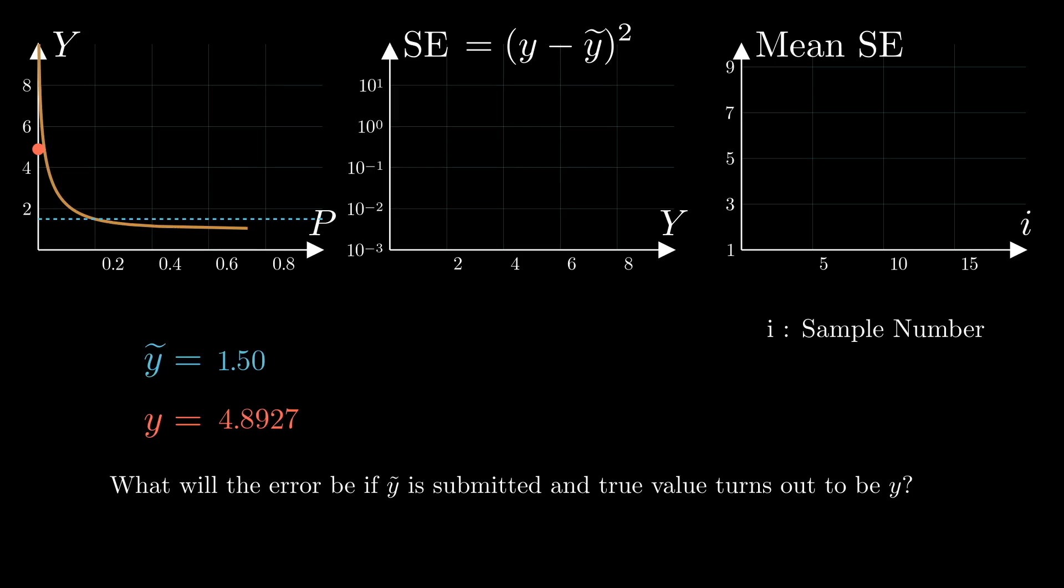The phrase turns out to be is essential here, as we are uncertain about the true point. Note that the dashed line is a point that we can potentially submit as our point forecast, a potential decision that we don't need to commit to, and the red dot is just one sample from the distribution.